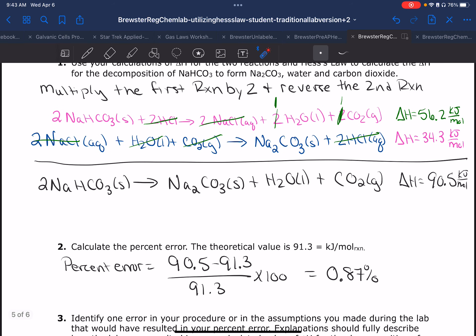Question number two says calculate the percent error, which is accepted minus experimental divided by accepted. So your experimental is 90.5, my accepted is 91.3. When you sit here and apply it, I only get 0.87% error.